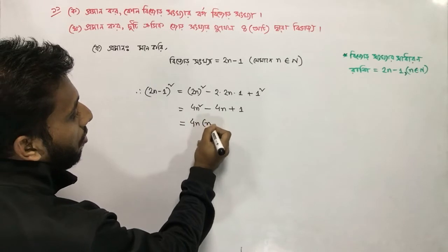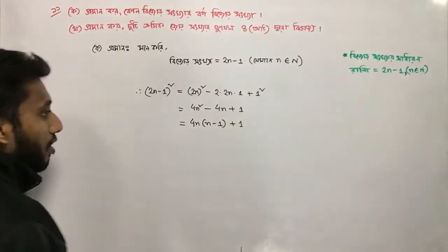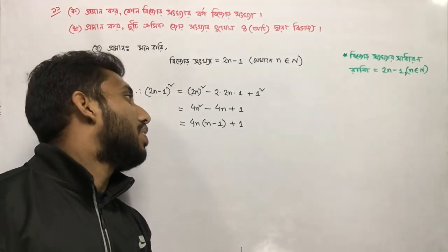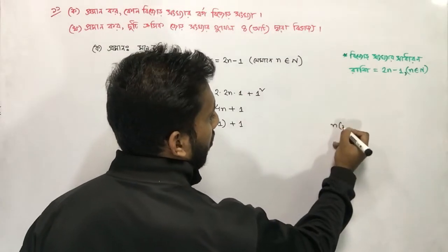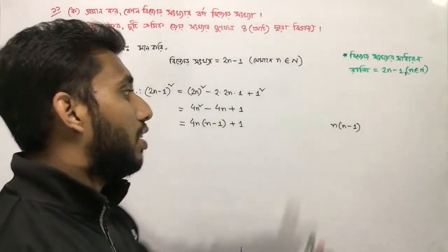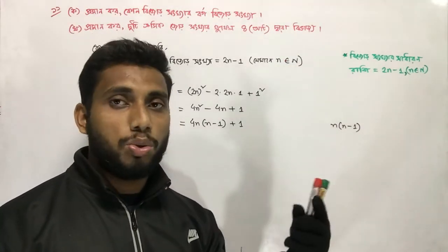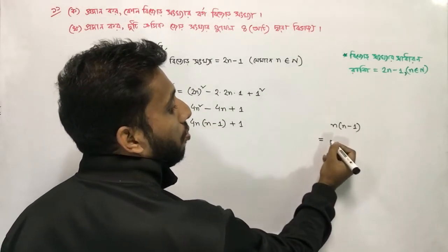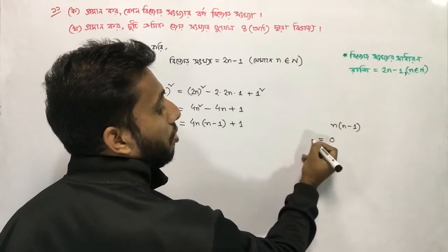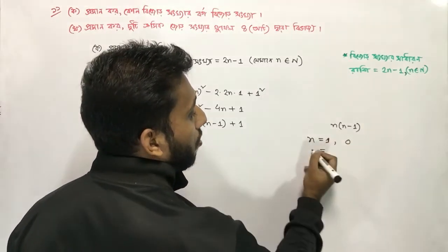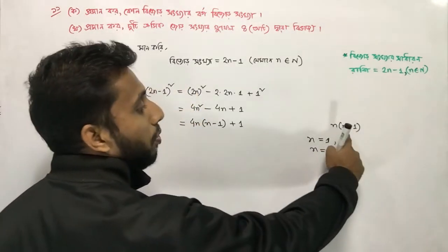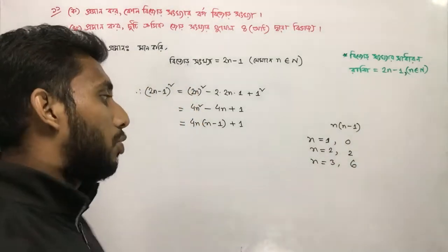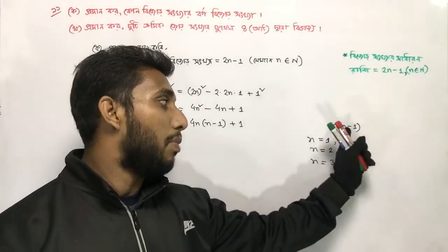4n minus 1 plus 1. n into n minus 1. n into n minus 1. Adding: n into n minus 1. Then n minus 1 to n, the difference is 2 minus 1. So we can see that n into n minus 1 is equal to 1.